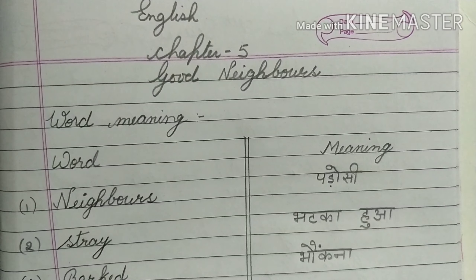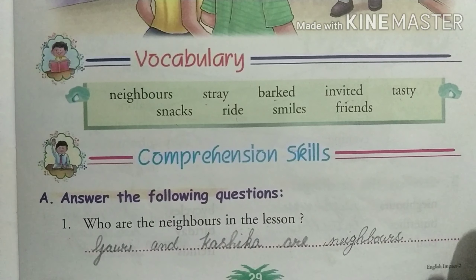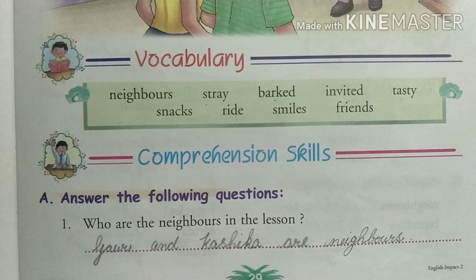Question answers. Who are the neighbours in the lesson? Lesson mein neighbours korn hai? Gori and Kashika are neighbours. Jo Gori aur Kashika hai, dono Padausi hai. Neighbours means Padausi.